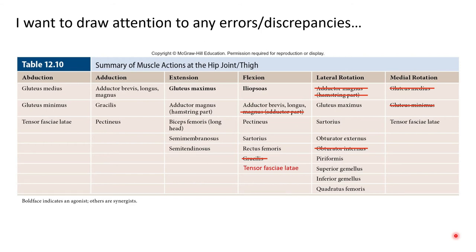Table 12.10 from the textbook summarizes all muscle actions at the hip. Some entries have been marked in red because they don't match the lab manual. For example, the adductor magnus is noted as having a hamstring portion that contributes mainly to hip extension. For this course, the adductor magnus should be considered a hip extender and hip adductor. Always refer to the actions listed in your lab manual rather than the textbook table.